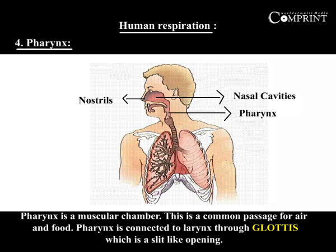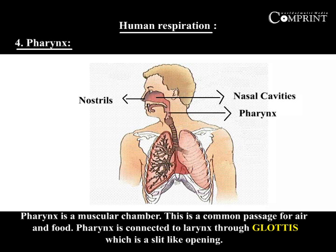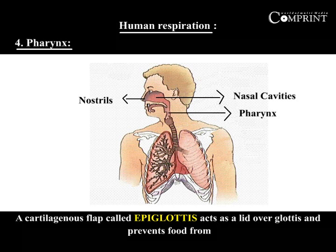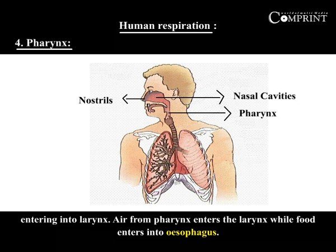Pharynx. Pharynx is a muscular chamber and is a common passage for air and food. Pharynx is connected to the larynx through the glottis, which is a slit-like opening. A cartilaginous flap called the epiglottis acts as a lid over the glottis and prevents food from entering into the larynx.